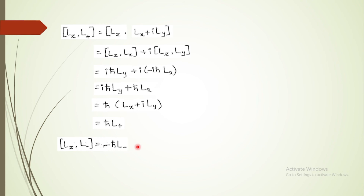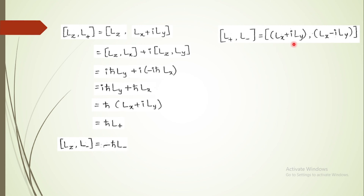Now let us understand whether the raising and lowering operators commute with each other, that is [L+, L−]. Substituting the values of the ladder operators, multiplying all terms and taking the inner products, we are finally left with 2ℏ·Lz. When you know the simple commutation relations for angular momentum components, these solutions are straightforward. So [L+, L−] is not equal to zero, meaning both operators do not commute with each other.